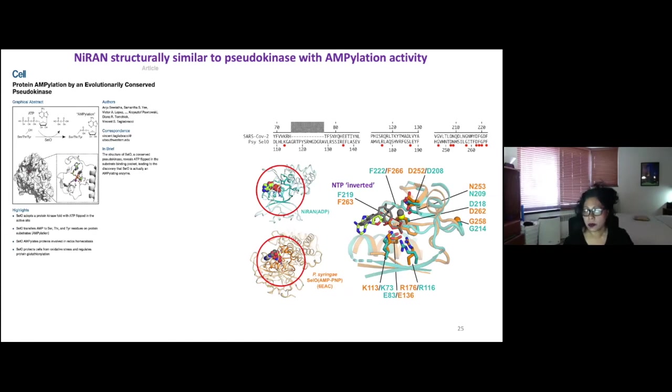In cyan is our NiRAN structure and in orange is the SelO pseudokinase structure. And highlighted here in these dots, in these bullets here are bases that are conserved between SelO and the NiRAN domain. And what I've done here is just also highlighted the group that did the work in the nidovirus.